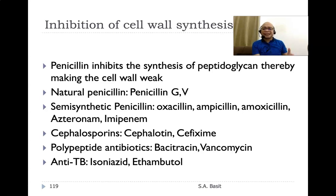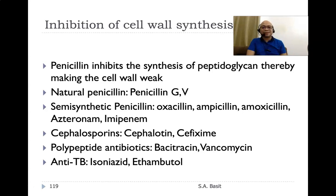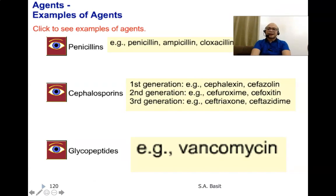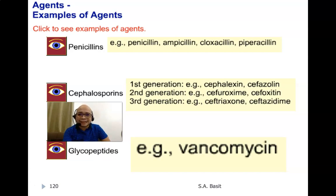Cephalosporins have developed over time — the third generation includes ceftriaxone and ceftazidime, and journals already document fourth and fifth generation cephalosporins. Vancomycin, a glycopeptide, is very important: if an organism becomes MRSA, vancomycin would be the drug of last resort. Penicillins are derivatives of a basic structure known as aminopenicillanic acid, which contains the beta-lactam ring. If organisms produce the enzyme beta-lactamase, it will destroy the beta-lactam ring, causing inactivation of penicillin.